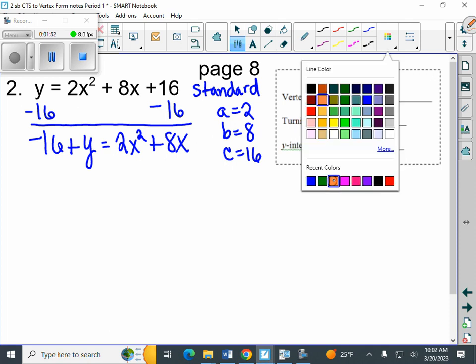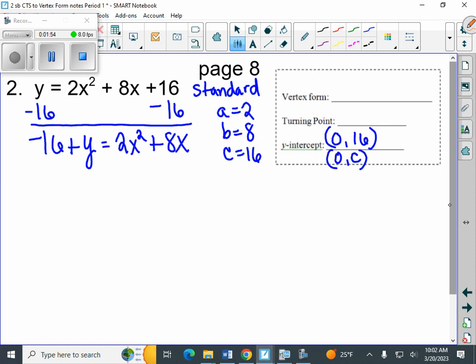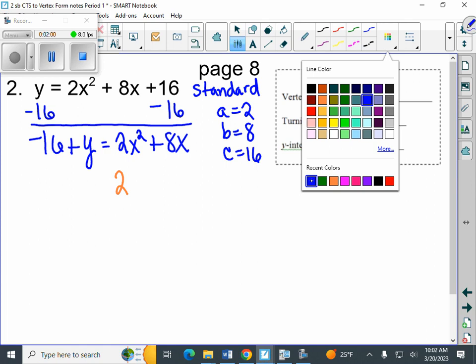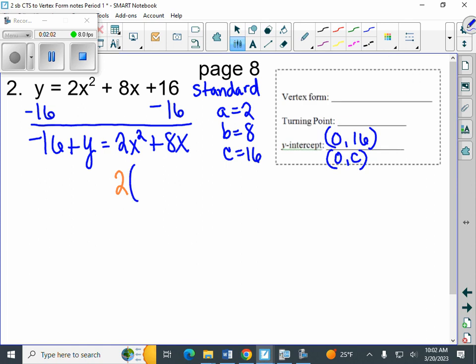So what we're going to do is we're going to take that 2 and we're going to factor it out. So this is going to become 2 out in front. And then when we factor that value out, 2 divided by 2 is 1x squared. 8 divided by 2 is 4x.